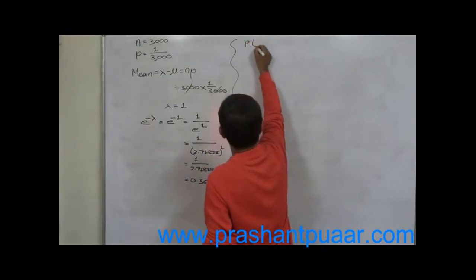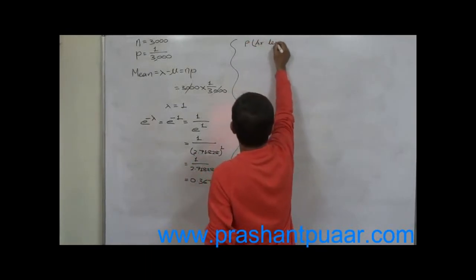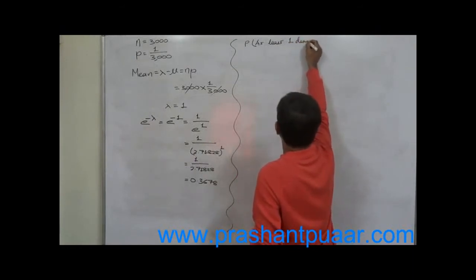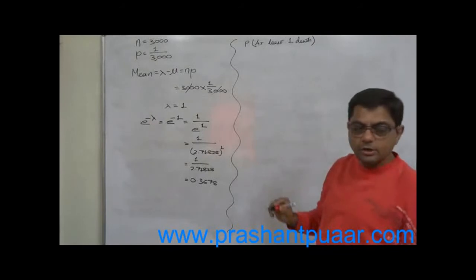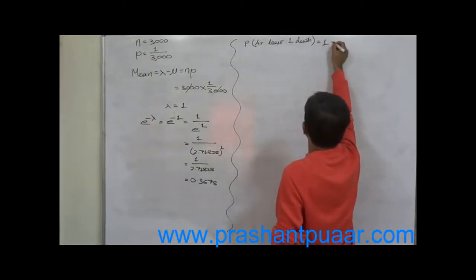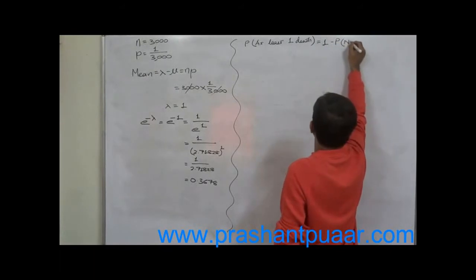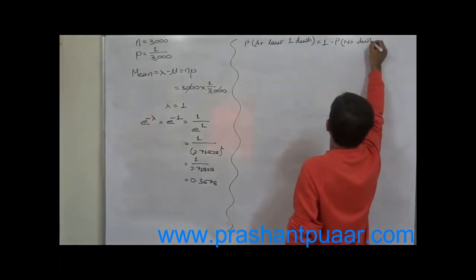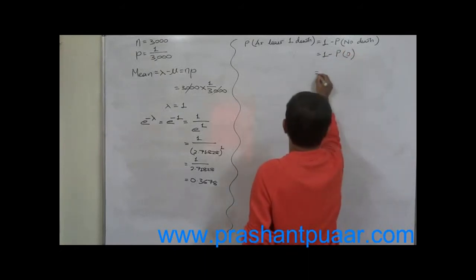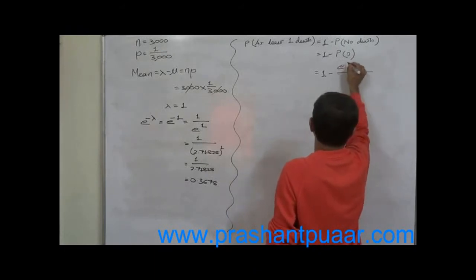Now the required probability is probability of at least one death due to flood. Probability of at least one means one minus probability of no death, that means 1 minus P of 0.